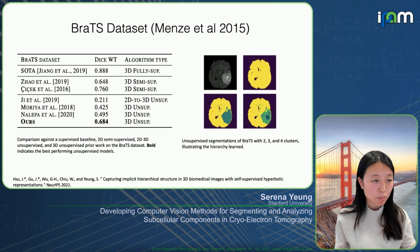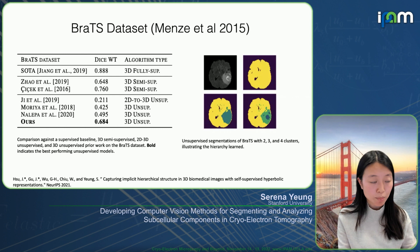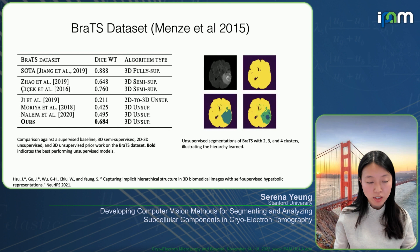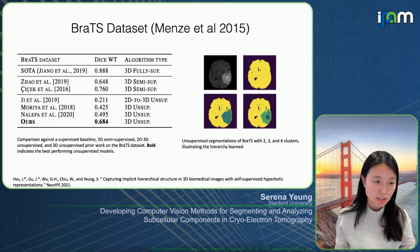On the BRATS MRI imaging dataset, quantitatively our approach shows improvements compared to previous work, doing much better than previous unsupervised methods and reaching a comparable range to some semi-supervised methods. The upper bound of fully labeled training data is shown at the very top. On the right, examples show unsupervised segmentations discovered using two, three, or four clusters — clustering at different levels of granularity captures different levels of this hierarchical structure.